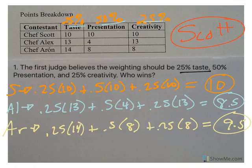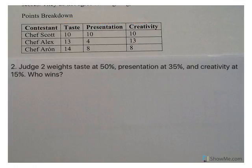Well, Judge 2 says, no, no, no, no, no. That's not how we're going to do this. Taste is going to be 50%. Presentation is 35, and creativity should be 15. Notice again that the percentage, they all add up to 100, so this is okay.